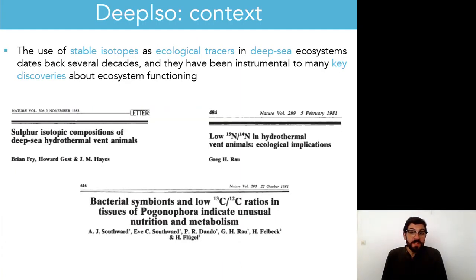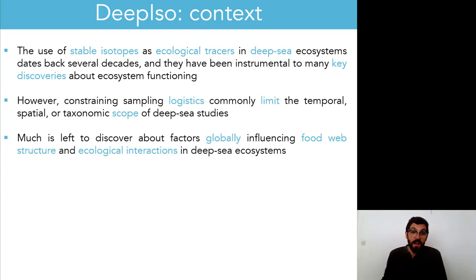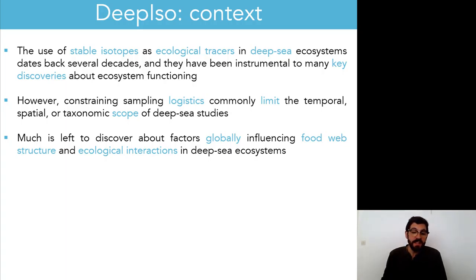The use of stable isotopes as ecological tracers in deep-sea ecosystems dates back to several decades, and they have been instrumental to many key findings, as evidenced by this selection of key papers. However, due to constraining sampling logistics, the temporal, spatial, or taxonomic scope of deep-sea studies is commonly limited, and as a result, much is left to discover about factors globally influencing food web structure and ecological interactions in deep-sea ecosystems.